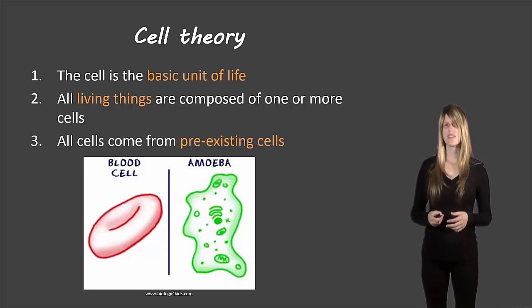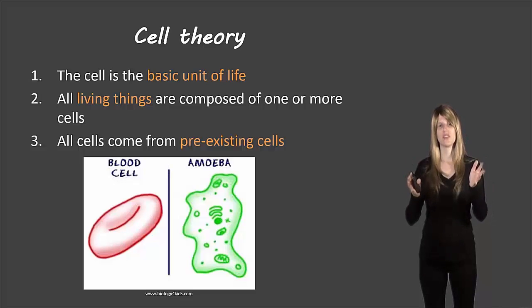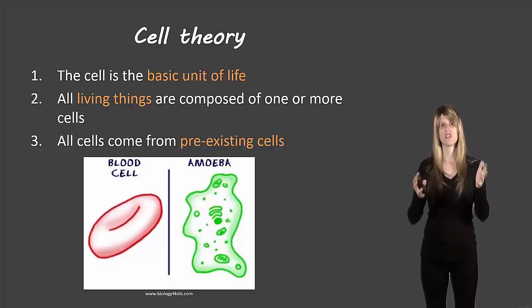And then finally, all cells come from pre-existing cells. Every cell that we have in our body came from one original cell and then that cell split into two, each of those cells split into two and so on through the cell cycle to make all of the cells in our body.